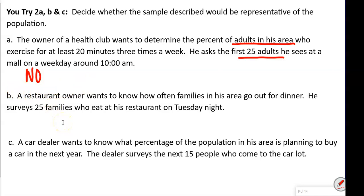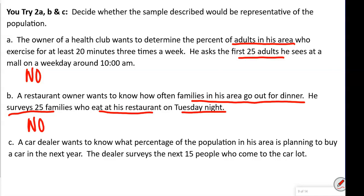Next, a restaurant owner wants to know how often families in his area go out for dinner. He surveys 25 families who ate at his restaurant on a Tuesday night. This is not representative — most people go out to eat on weekends, so Tuesday-night diners are a biased subset. Finally, a car dealer wants to know what percent of the population plans to buy a car in the next year. He surveys the next 15 people who come to his car lot — also not representative, because people who didn't come to his lot are underrepresented.